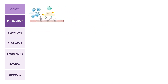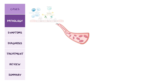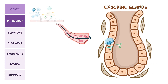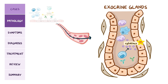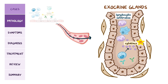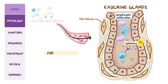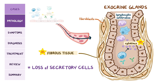Both T-cells and antibodies enter the circulation and reach the exocrine glands, where activated T-cells secrete cytokines to recruit even more immune cells. This results in lymphocytic infiltration of the exocrine glands, which ends up damaging the exocrine gland tissue. Eventually, the secreted cytokines also activate fibroblasts, which produce fibrous tissue that replaces the damaged tissue. The end result is a loss of secretory cells in the glands.